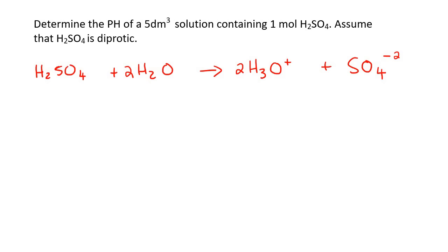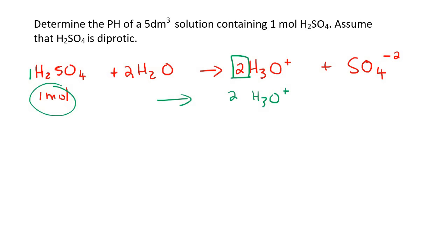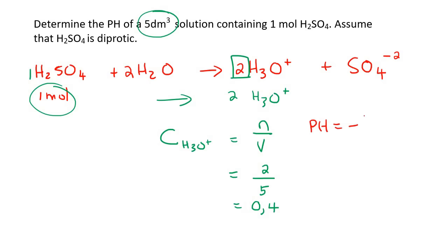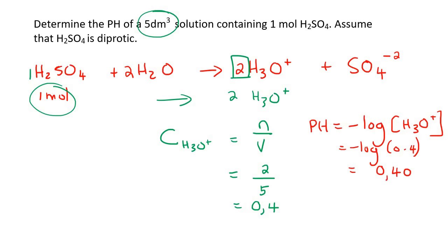We know the moles of H₂SO₄ — they've given that to us as one mole. The mole ratio is one H₂SO₄ to two H₃O⁺, so if you didn't balance the equation you wouldn't see that. One mole of H₂SO₄ becomes two moles of H₃O⁺. Using n/V, the concentration of H₃O⁺ is 2/5 = 0.4 mol·dm⁻³. So pH = −log(0.4) = 0.40. Always remember to balance your equation when reacting with water.